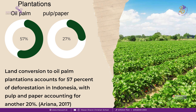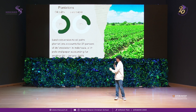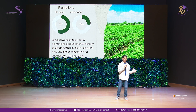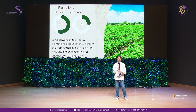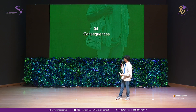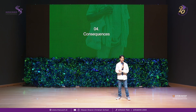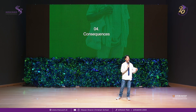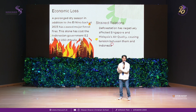The second cause is plantations. Oil palm and pulp paper account for 84% of deforestation in Indonesia. That is a lot, and for the same reason — people want to make a living or make a profit from it.